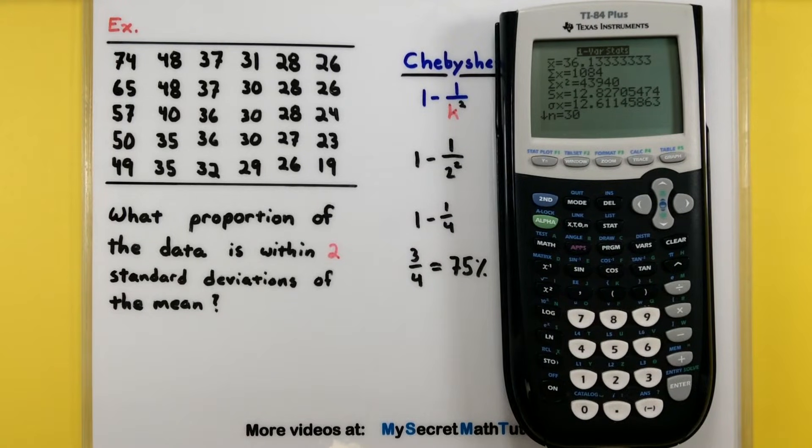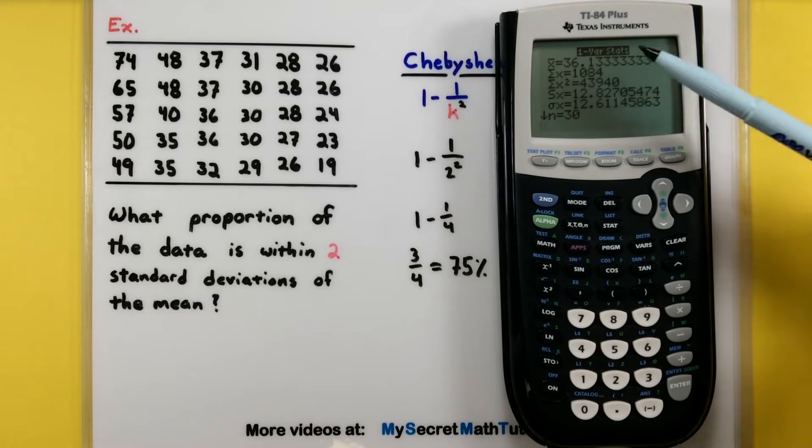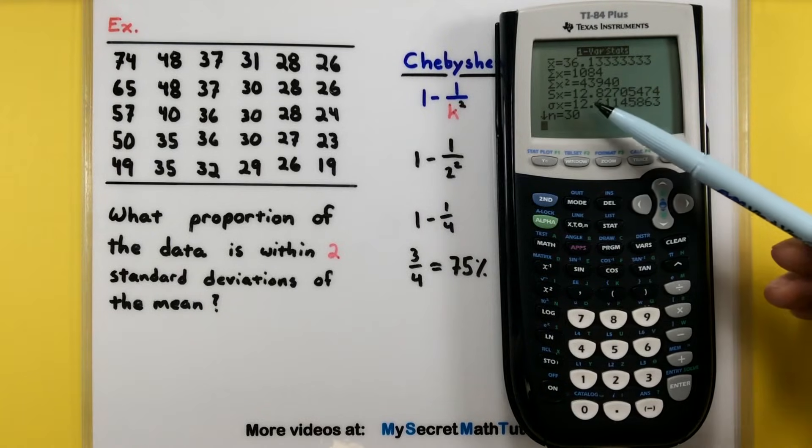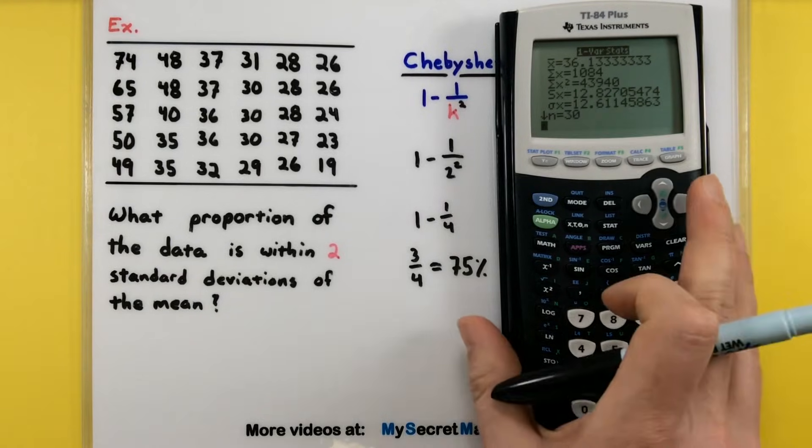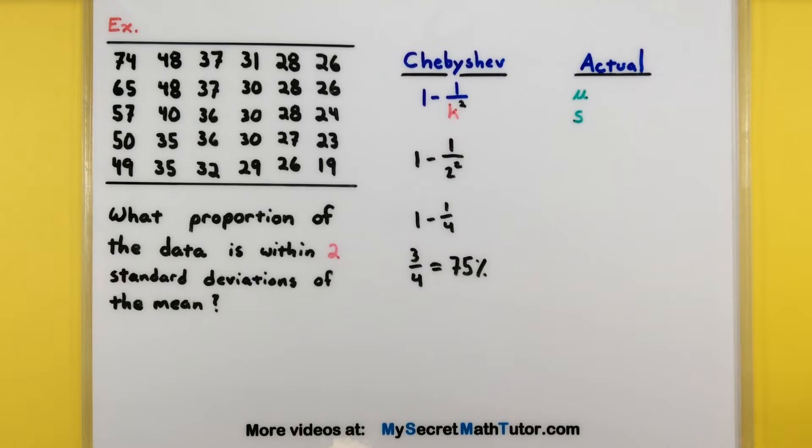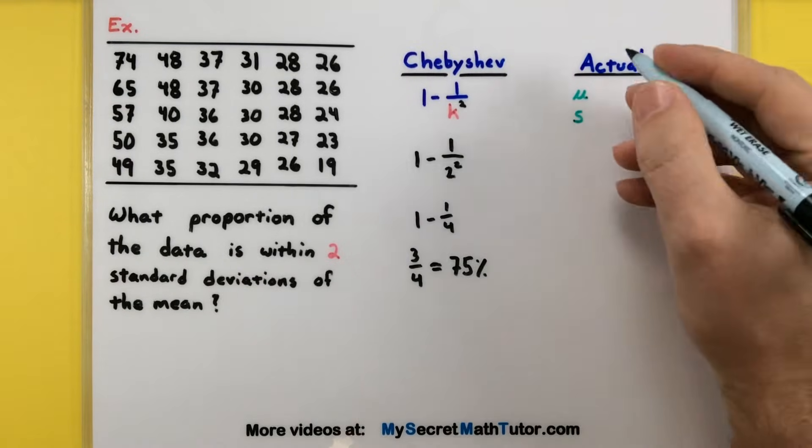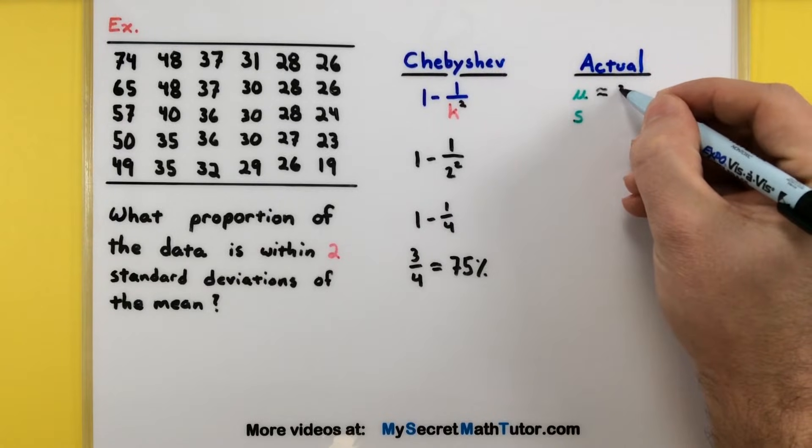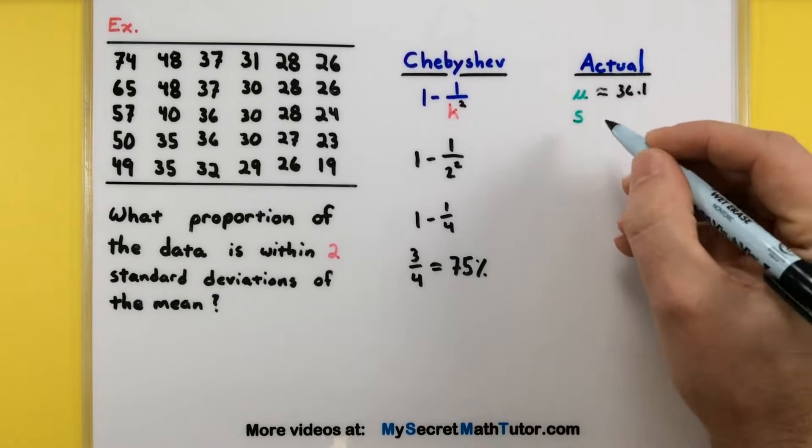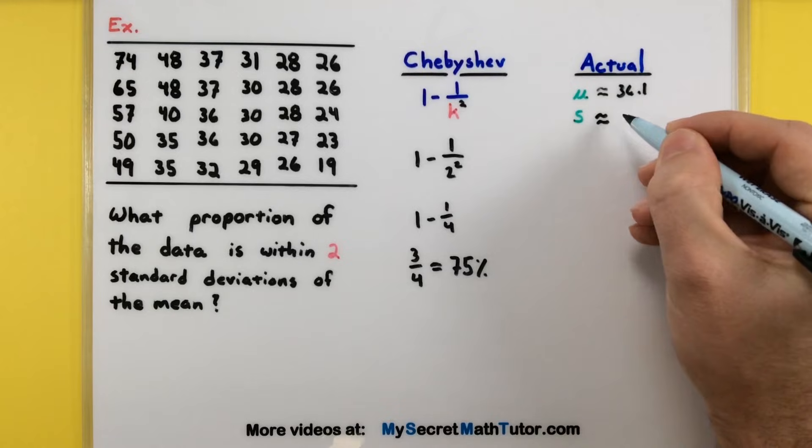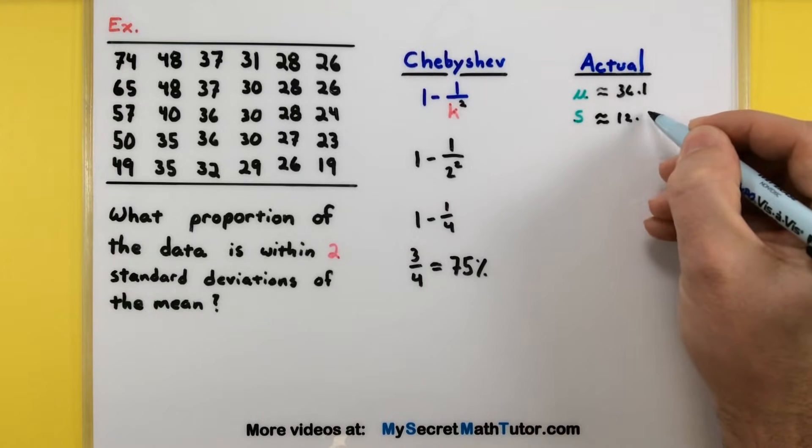All right, and with that it looks like we have a mean of around 36.1 and a sample standard deviation of 12.8. So let's go ahead and write down those values and see what we need to do with them. So mean, that was around 36.1, standard deviation around 12.8.